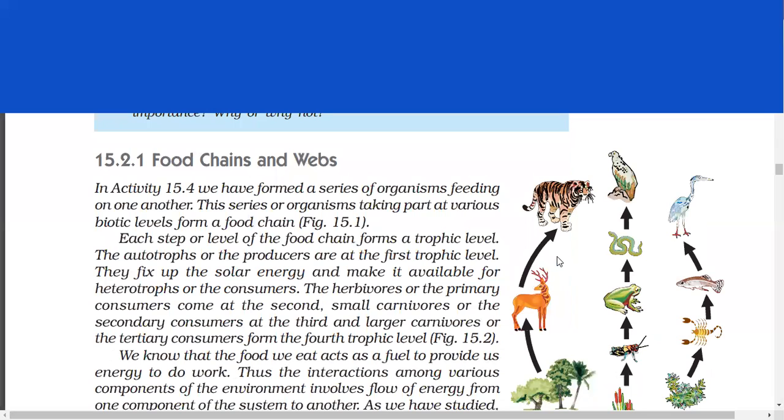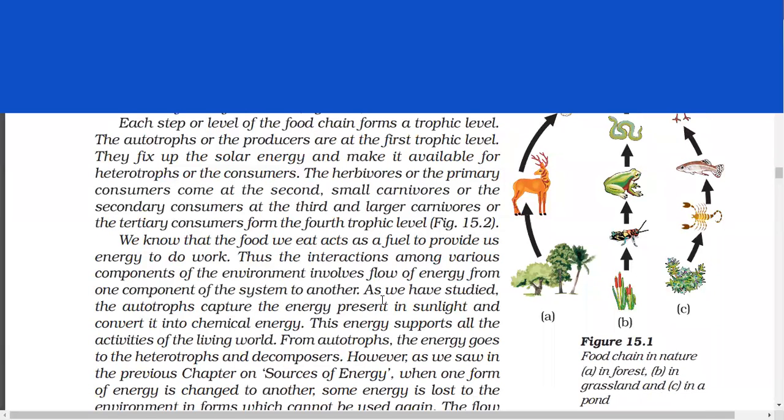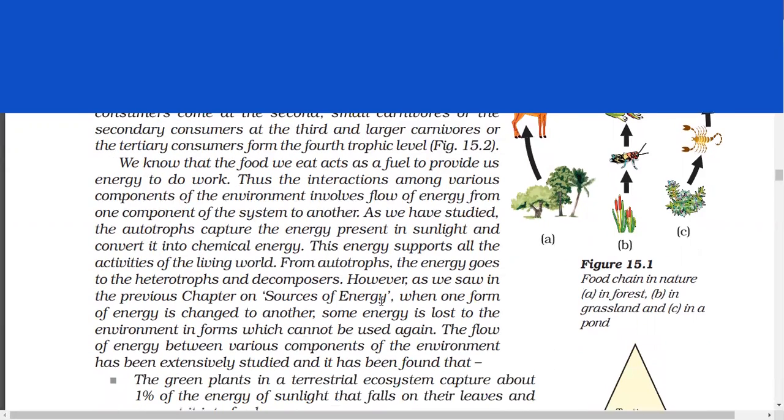Food chains and webs. In activity 15.4 we have formed a series of organisms feeding on one another. This series of organisms taking part at various biotic levels form a food chain. Each step or level of the food chain forms a trophic level. The autotrophs or the producers are at the first trophic level. They fix up the solar energy and make it available for heterotrophs or the consumers. The herbivores or the primary consumers come at the second. Small carnivores or the secondary consumers at the third. And large carnivores or the tertiary consumers form the fourth trophic level. We know that the food we eat acts as a fuel to provide us energy to do work. Thus, the interactions among various components of the environment involves flow of energy from one component of the system to another. As we have studied, the autotrophs capture the energy present in sunlight and convert it into chemical energy. This energy supports all the activities of the living world. From autotrophs, the energy goes to the heterotrophs and decomposers.